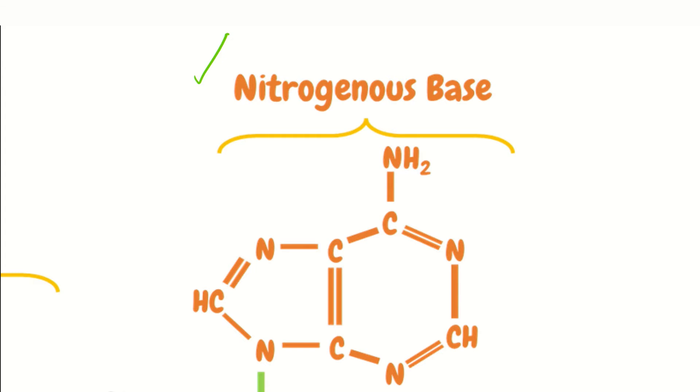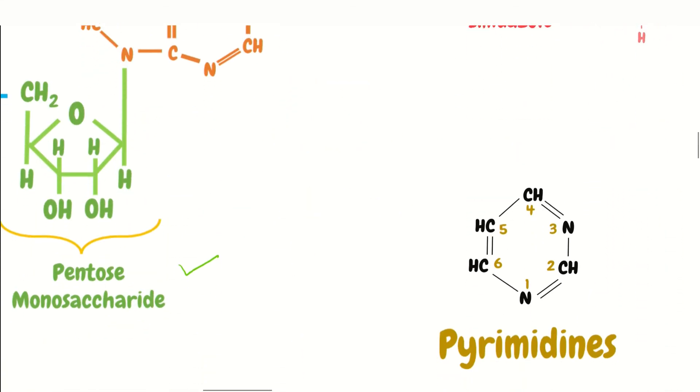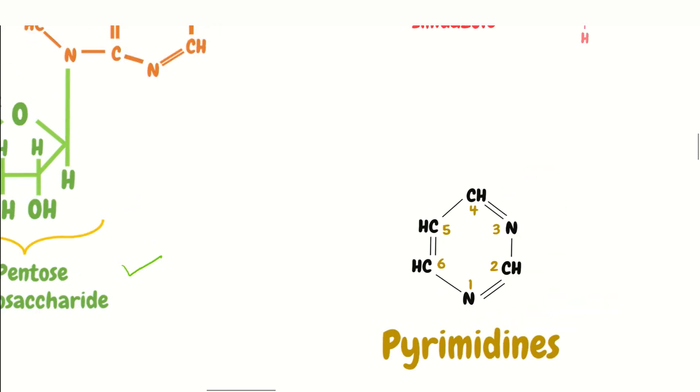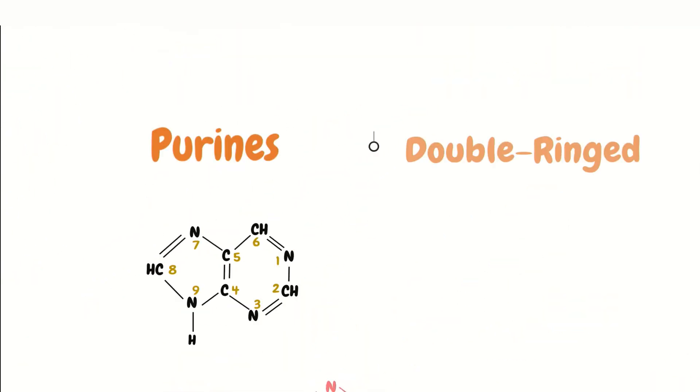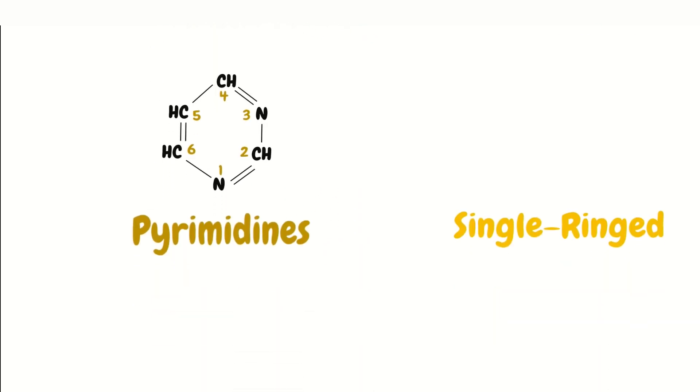So nitrogenous base - the name giving you a hint that nitrogen is a must. Now they belong to two different families of compounds: the purines and the pyrimidines. Purines are double-ring structures, whereas pyrimidines are single-ring structures. A point worth noticing, as this is going to help you remember their structures.